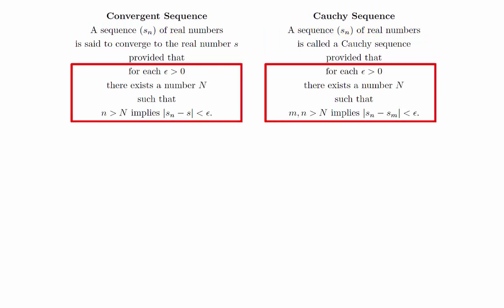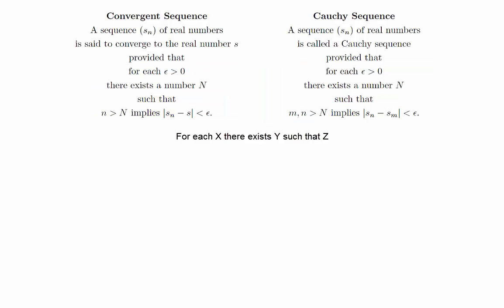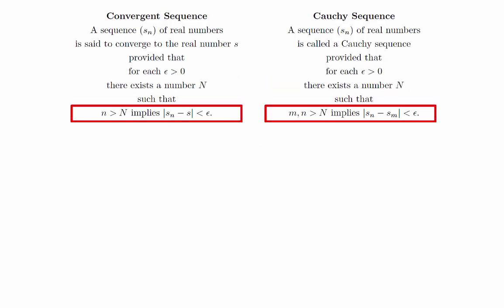When we get to the conditions, we see that they are very similar to each other. Both conditions are of the form, for each x there exists y such that z. In fact, the x and y for both definitions are identical: for each ε > 0, there exists a number N. This means the entire difference lies in the condition.